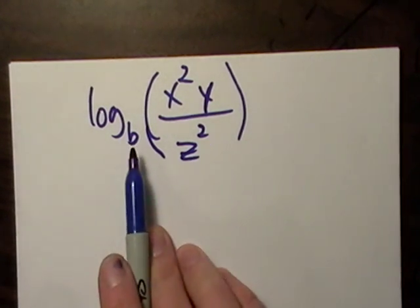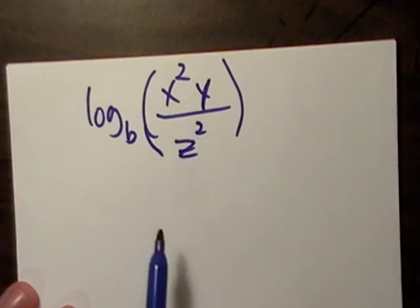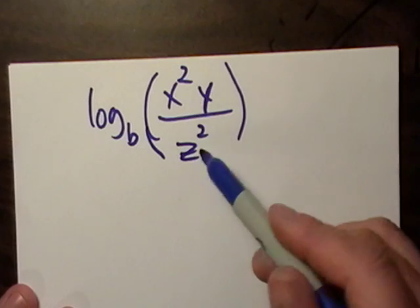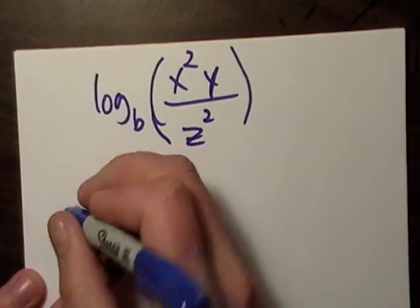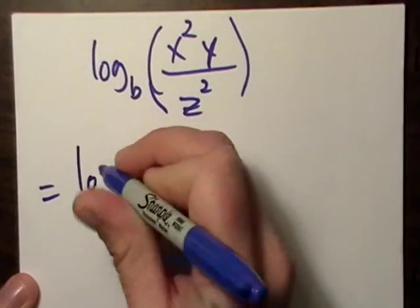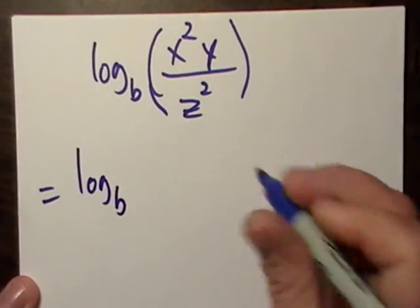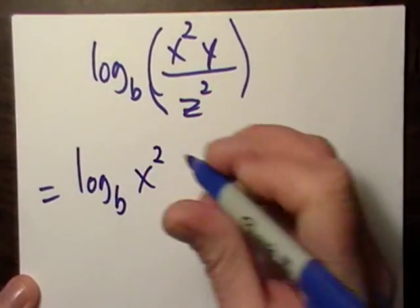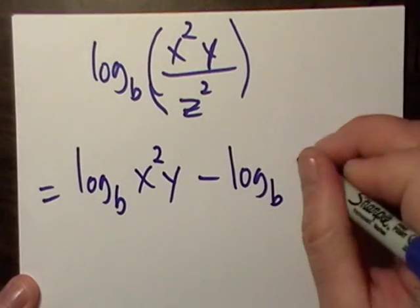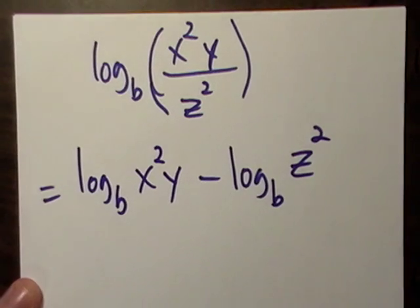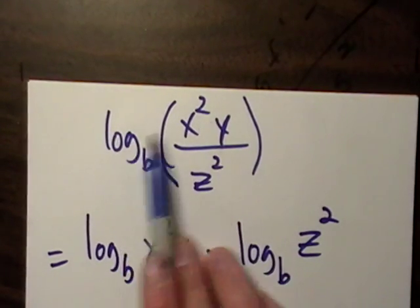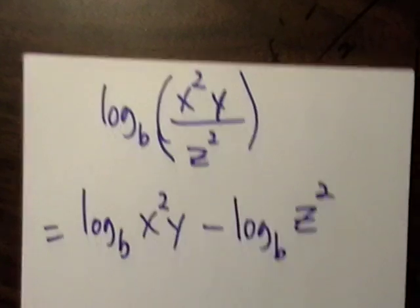Okay, log B times this stuff. I see here, this is a quotient, it's a fraction. So I'm immediately, I want to just go ahead and just rewrite it as the quotient rule tells me I can, which is log of the numerator minus log of the denominator.